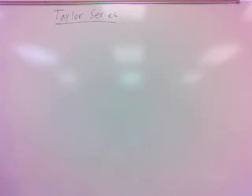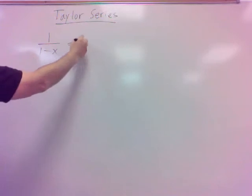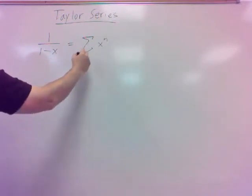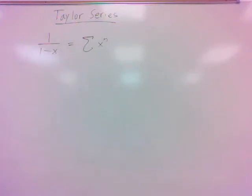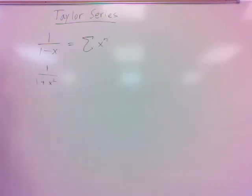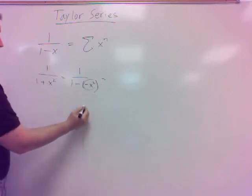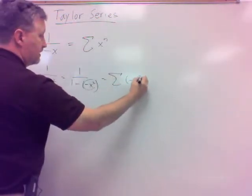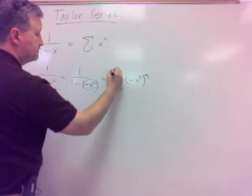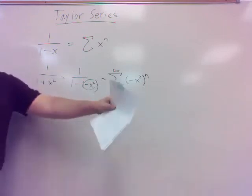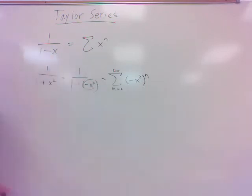From last section, we were able to write a function like 1 over 1 minus x as a power series, which that was the one we basically started with. And then we played our little game and said, if I was doing 1 over 1 plus x squared, well, I can write that as 1 over 1 minus negative x squared. So here, x is being played by the role of negative x squared, and I can write the sum from 0 to infinity. So we can get a power series representation of that.